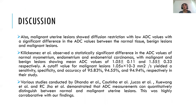Malignant uterine lesions show diffusion restriction with low ADC values, with a significant difference between normal tissue, benign lesions, and malignant lesions. Kilikismas et al. observed a statistically significant difference in ADC values of normal myometrium, endometrium, and endometrial carcinomas, with malignant and benign lesions showing mean ADC values of 1.05 ± 0.11 and 1.55 ± 0.33 × 10⁻³ mm²/s respectively. A cutoff value of 1.05 × 10⁻³ mm²/s yielded sensitivity, specificity, and accuracy of 95.83%, 94.55%, and 94.94% respectively. Various studies by Dhanda et al., Coutinho et al., Lucas et al., Zhuowang et al., and R.C. Jai et al. demonstrated that ADC measurements can quantitatively distinguish between normal and malignant uterine lesions, highly corroborating our findings.